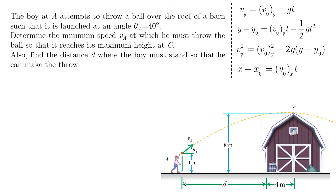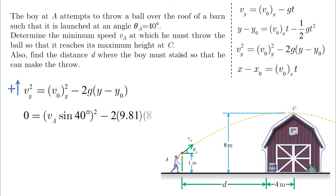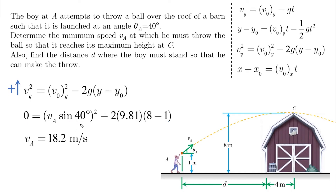The first clue is the maximum height, and this directly suggests that we start with the third equation. Taking the positive up from the ground, at the maximum height of 8, Vy is 0. And at the initial height of 1, the initial Vy is VA sine 40. The result is VA equals 18.2 meters per second.